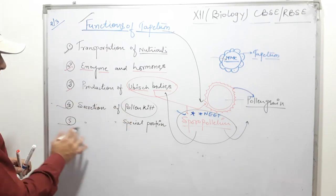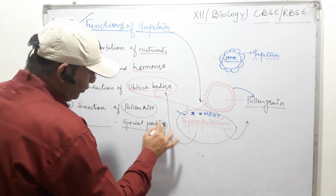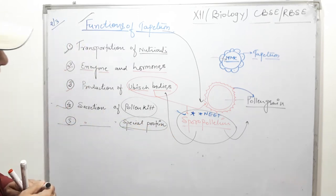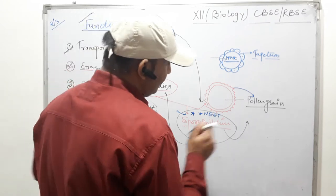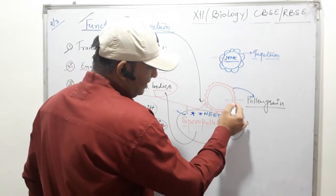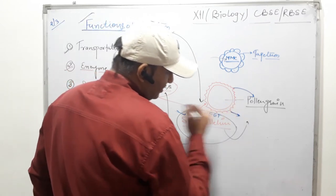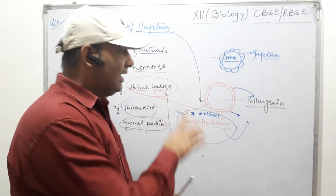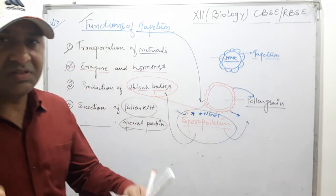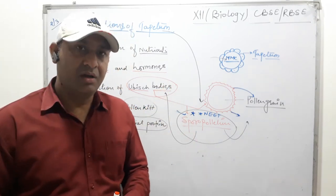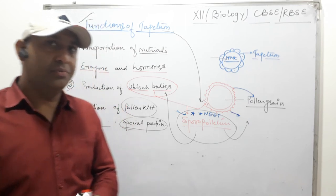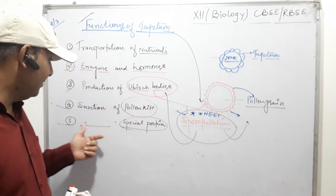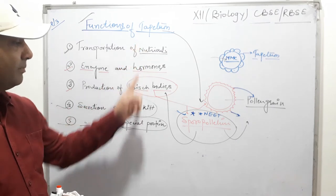Fifth function of tapetum is secretion of special protein. The special protein secreted by tapetum is present just outside the membrane, and it is important for species compatibility. It means the pollen grain is allowed to germinate only on the stigma of the same species. So it is very important for recognition of the same species, and this special protein is secreted by the tapetum.